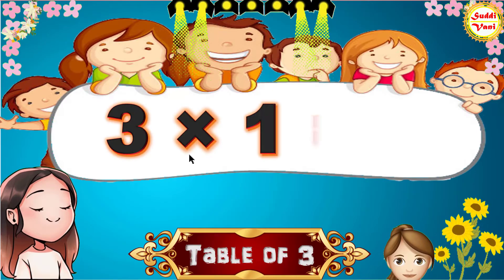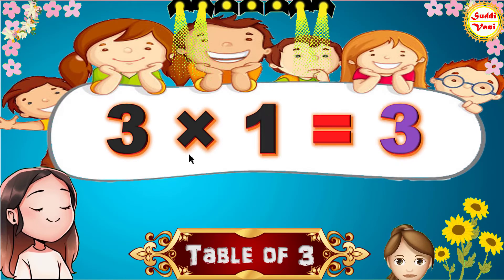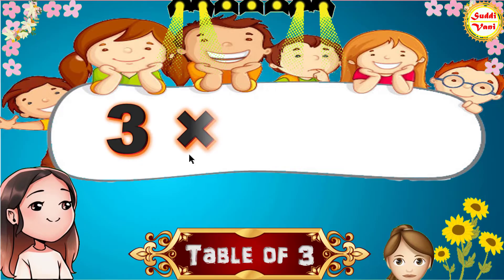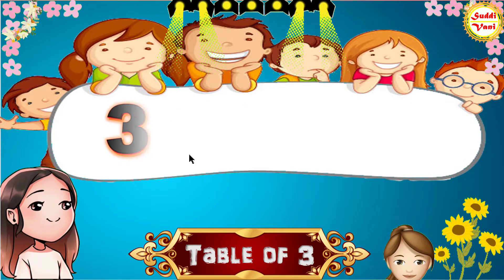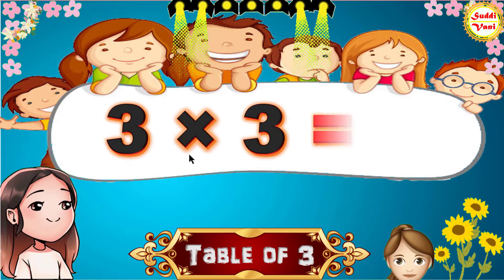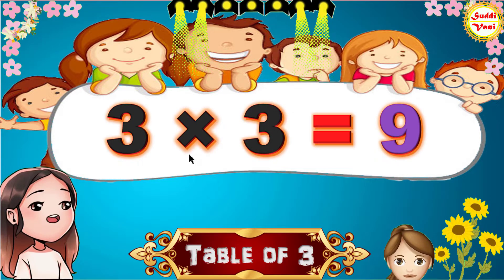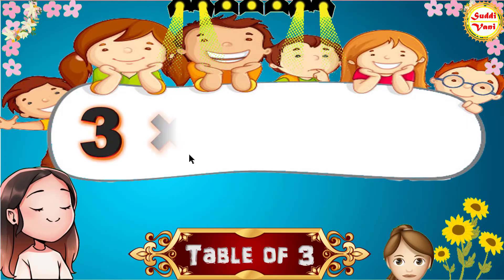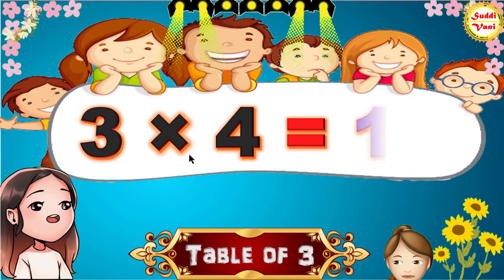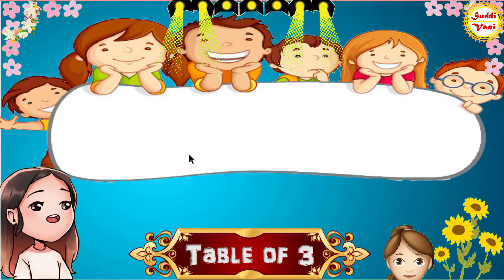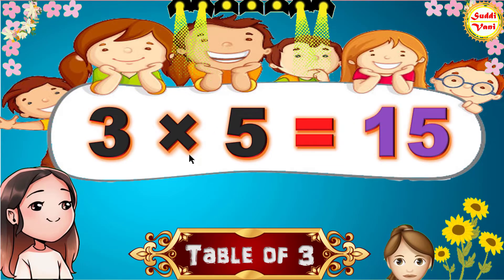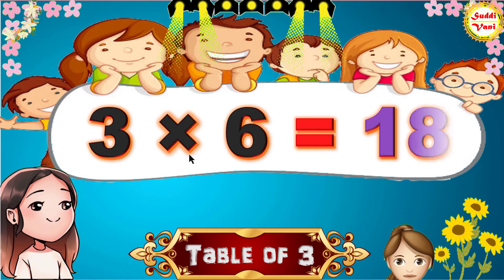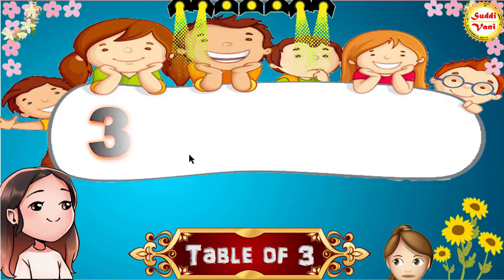3 1s are 3, 3 2s are 6, 3 3s are 9, 3 4s are 12, 3 5s are 15, 3 6s are 18.